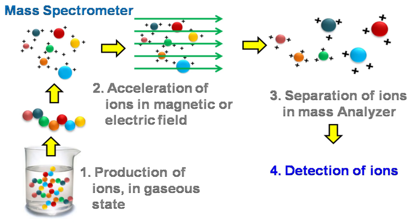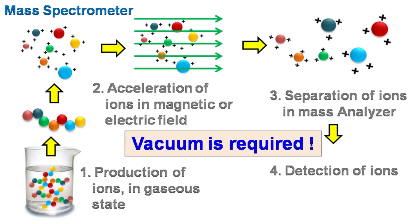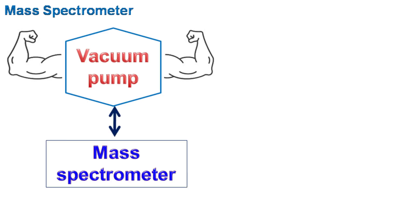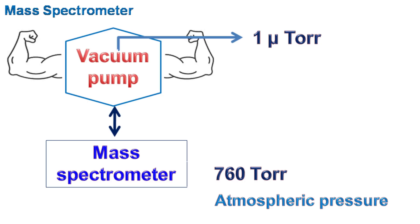In this technique, because we are dealing with production and detection of ions, we need to have very strong vacuum. Without vacuum, the ions produced will collide with air molecules and not reach the detector. The vacuum pump connected with the mass spectrometer generates a vacuum having air pressure of one micro torr.